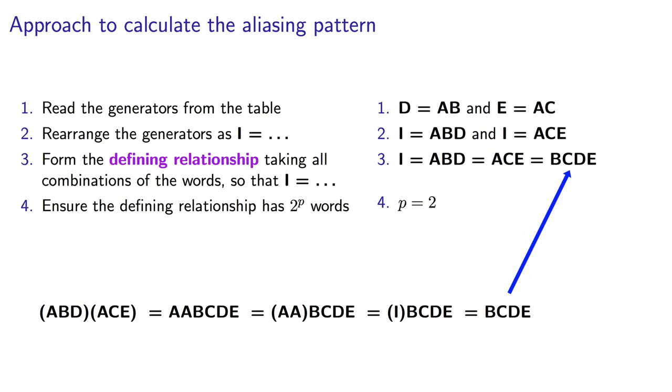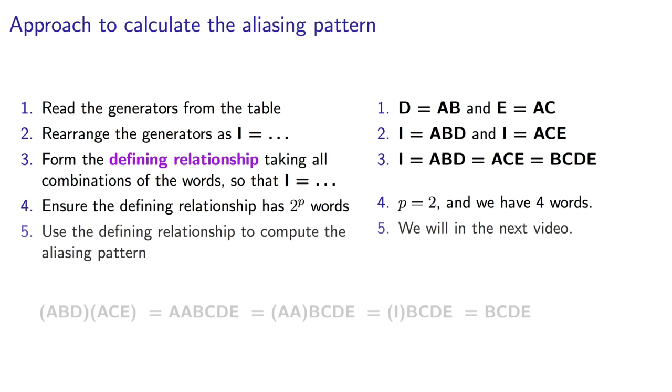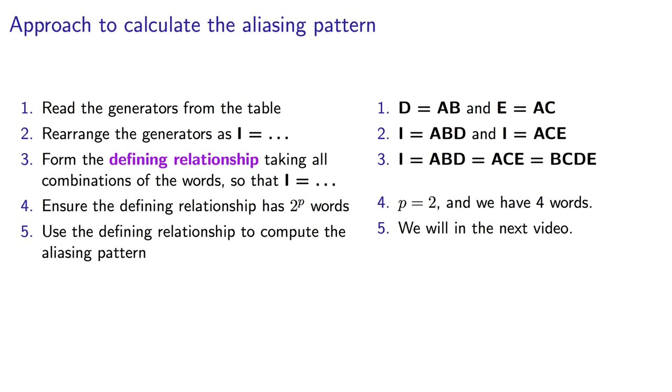So, here's my complete defining relationship with four words. I equals ABD equals ACE equals BCDE. That simple set of words holds the key to figuring out the aliases. We're going to see exactly how to do that in the next video.